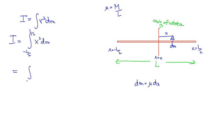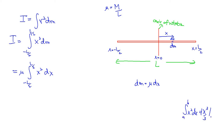Plugging dm = μ dx into the integral gives the integral from -L/2 to L/2 of x² μ dx. Since μ is a constant, we integrate x² dx to get x³/3, then apply the limits: upper limit L/2 and lower limit -L/2.